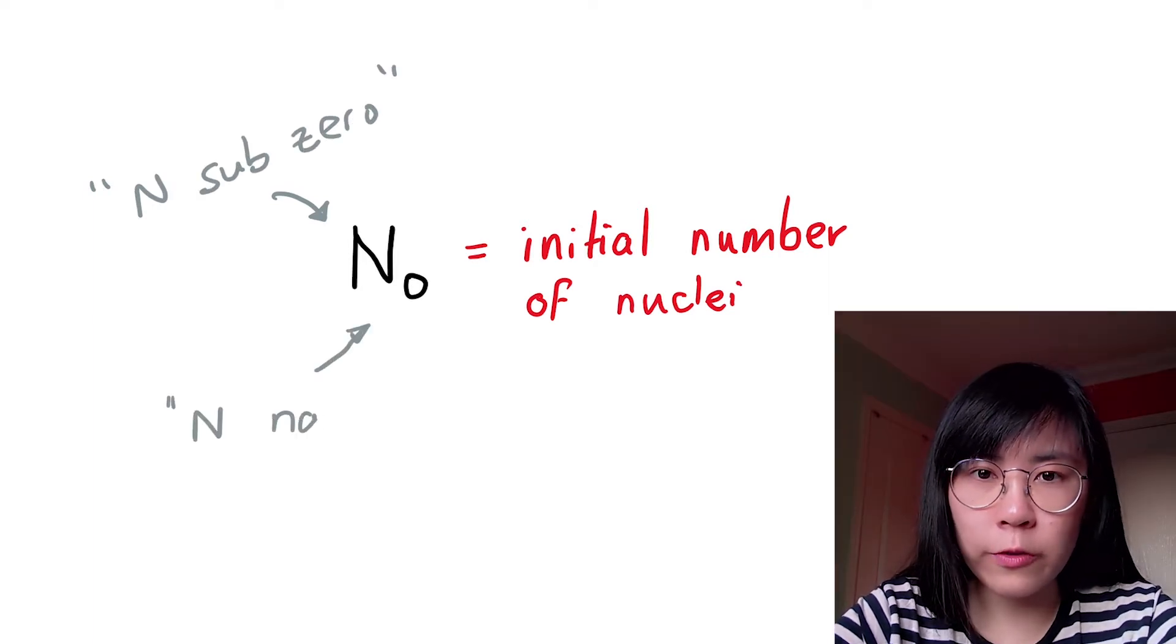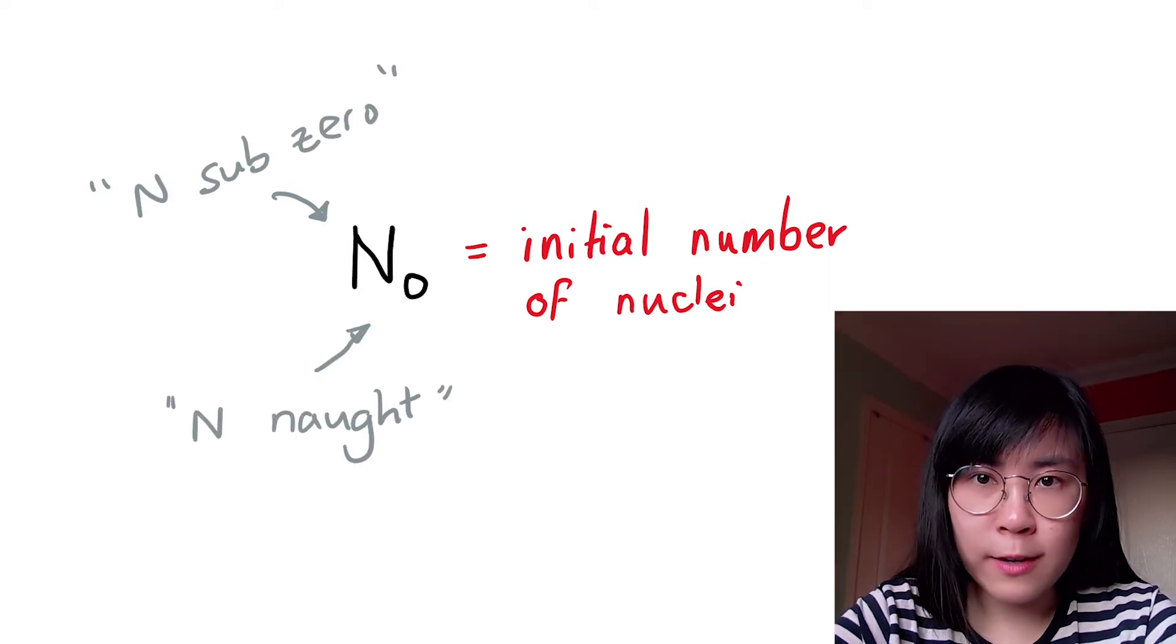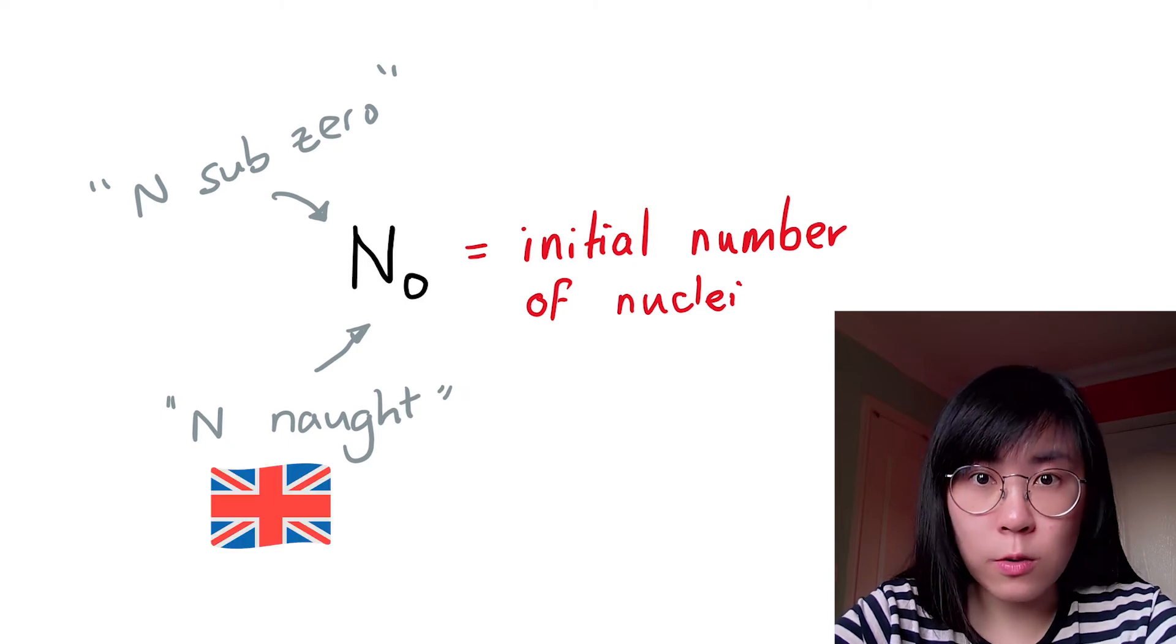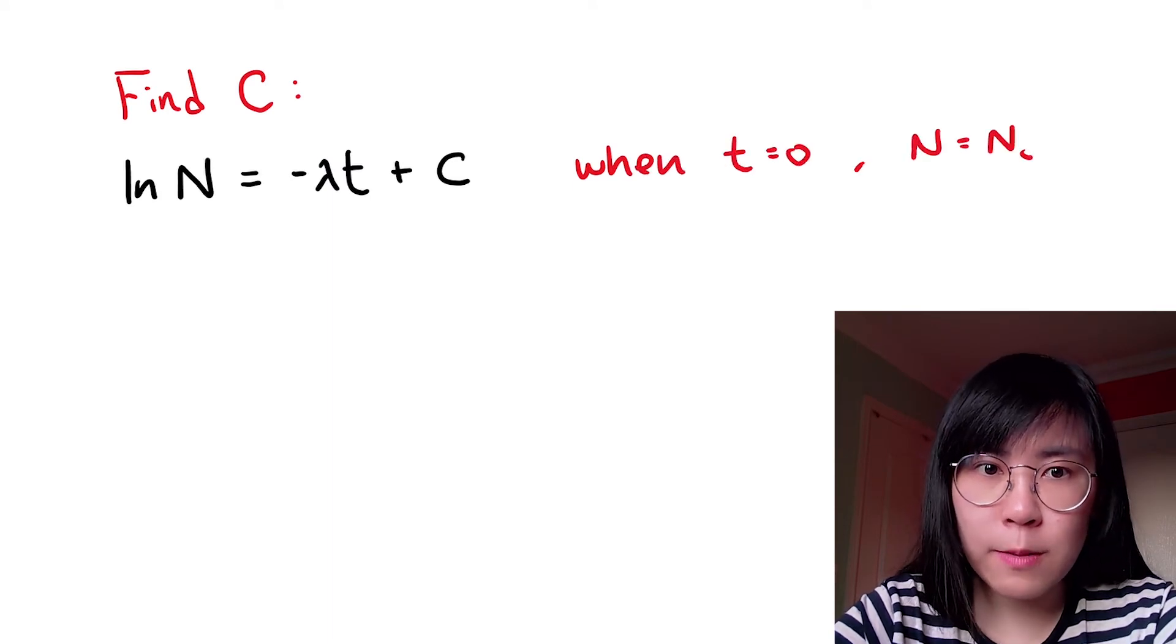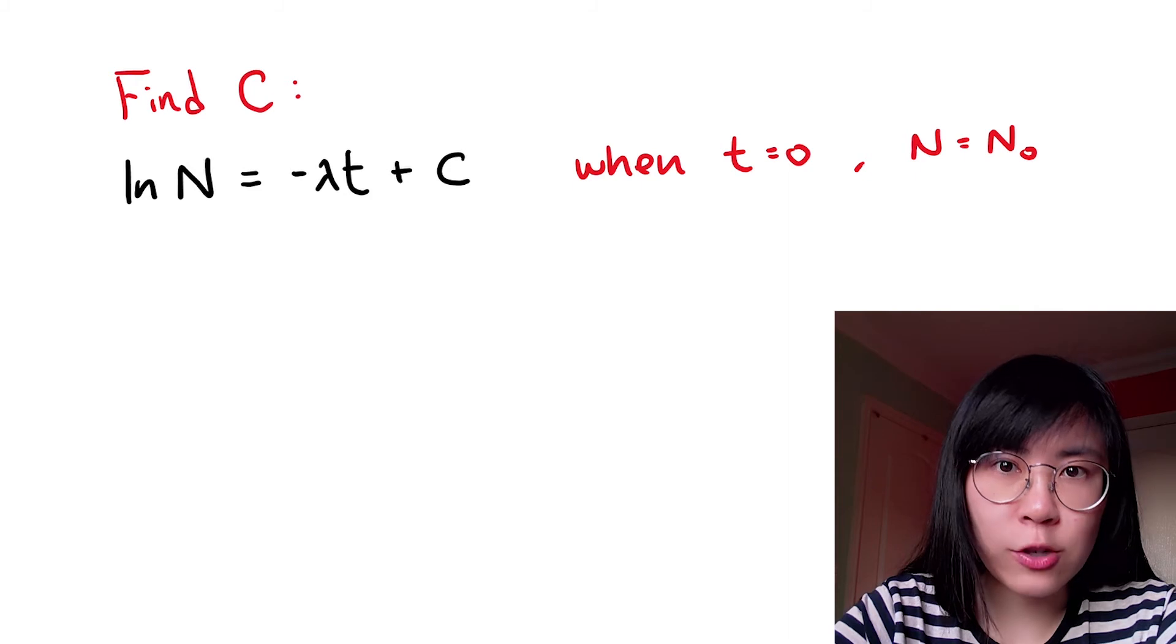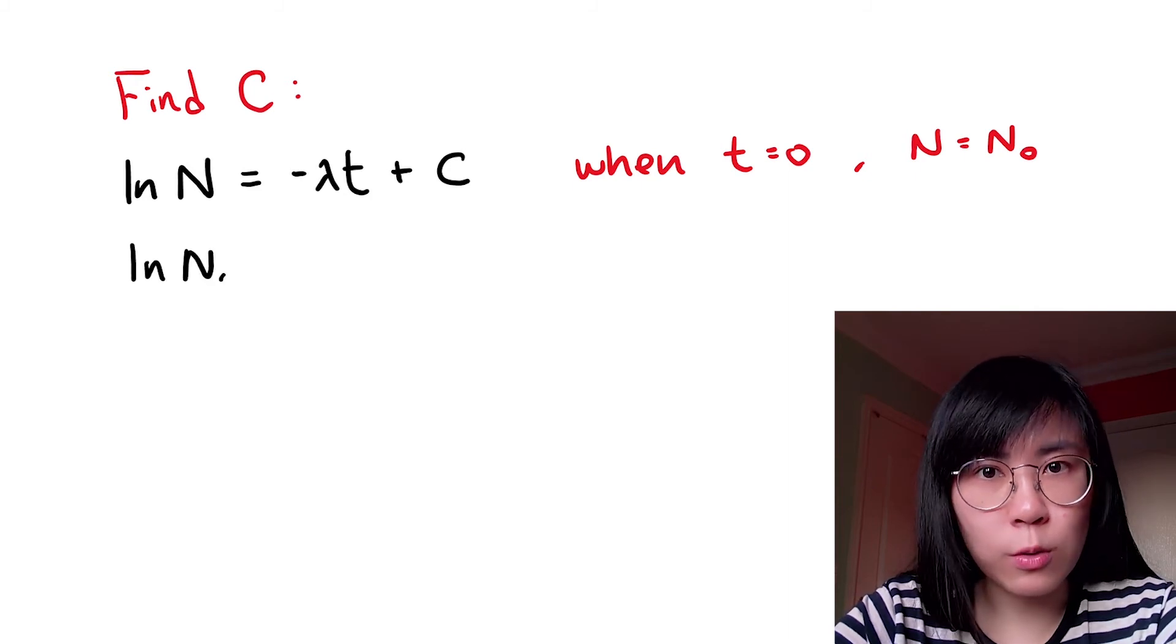Some people prefer to call this N sub zero but I know that others, especially in the UK, they call it N naught. So when t is zero, the number of nuclei at that moment in time is the same as the initial number of radioactive nuclei.